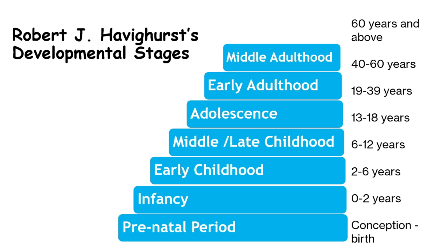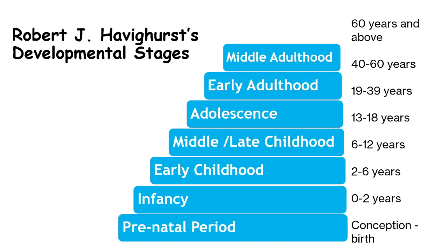Stage 7: Middle Adulthood, 40 to 60 years. This stage involves expanding roles and responsibilities, such as career achievements and supporting the next generation. Individuals often reflect on their life and career. An example could be a 50-year-old professional who mentors younger colleagues and balances work with family responsibilities.